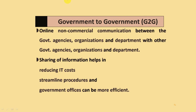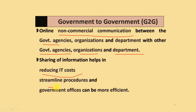Government to Government (G2G): this involves non-commercial communications between government agencies, organizations, and departments with other government agencies and departments. It involves sharing of information and helps in reducing IT costs, streamlining procedures, and making government offices more efficient. This is the end of the Chapter 4 summary.